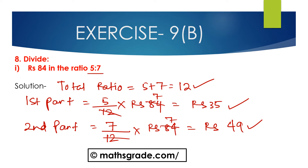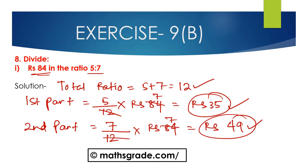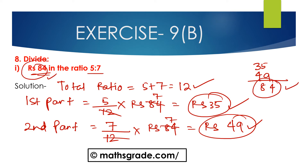So in the ratio of 5 to 7, we get 35 and 49 rupees. If we add 35 and 49, we get 84 rupees, so our answer is correct — this is the verification. 35 plus 49 is 84. So dividing 84 rupees in the ratio of 5 to 7, the first part is 35 rupees and the second part is 49 rupees.